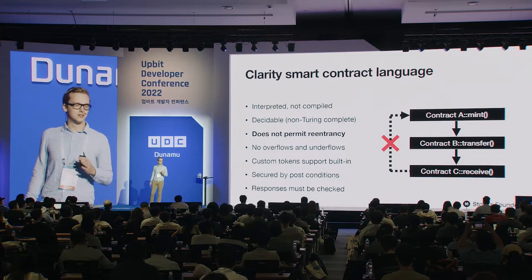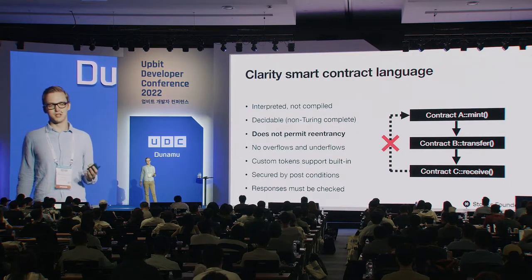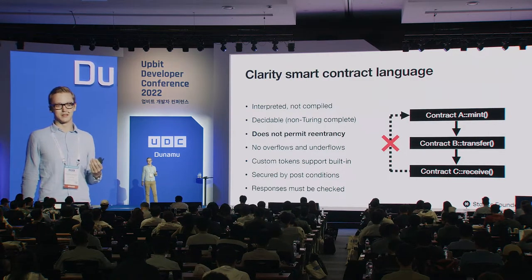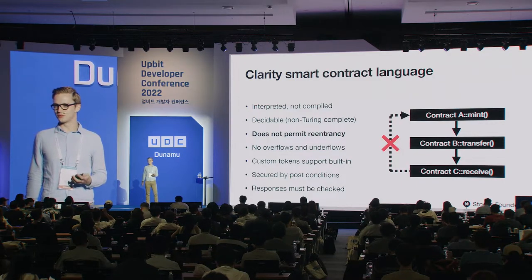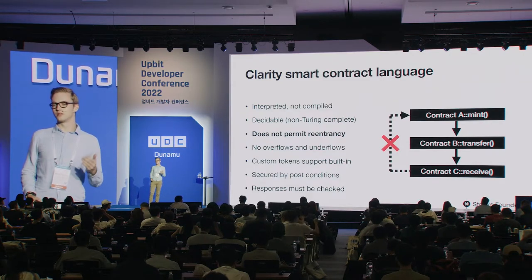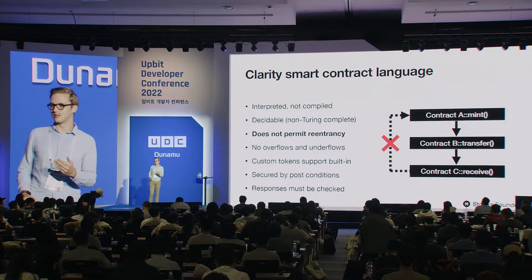Re-entrancy is not permitted at the language level. Re-entrancy has caused a lot of grief in the crypto ecosystem because it allows mechanisms developers don't intend. For example: a user calls Contract A, which calls Contract B, and Contract B calls back into Contract A — re-entering the same function — leading to unintended balance updates and loss of funds. Clarity does not allow re-entrancy at the language level; if static analysis shows a re-entrant call, it is rejected.